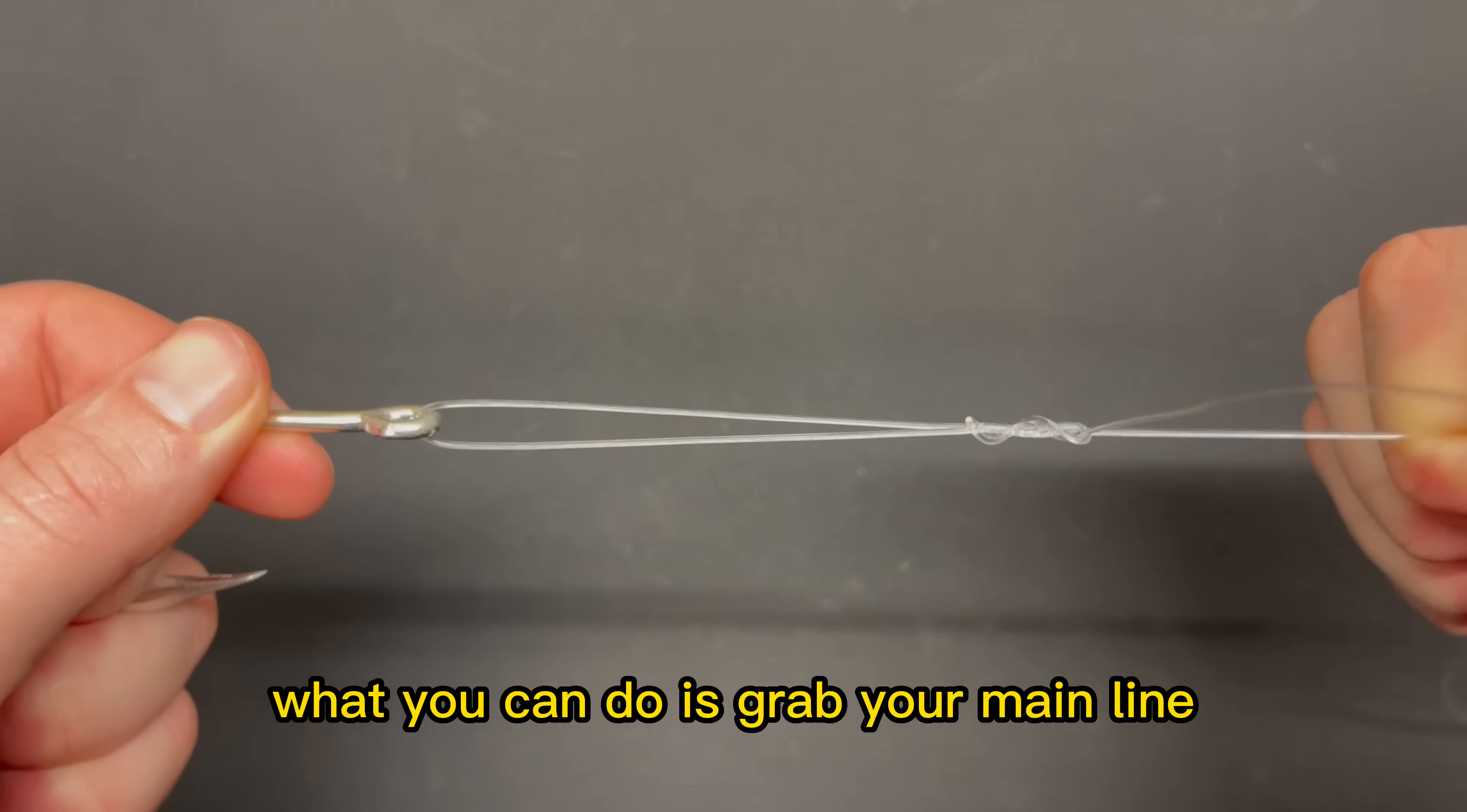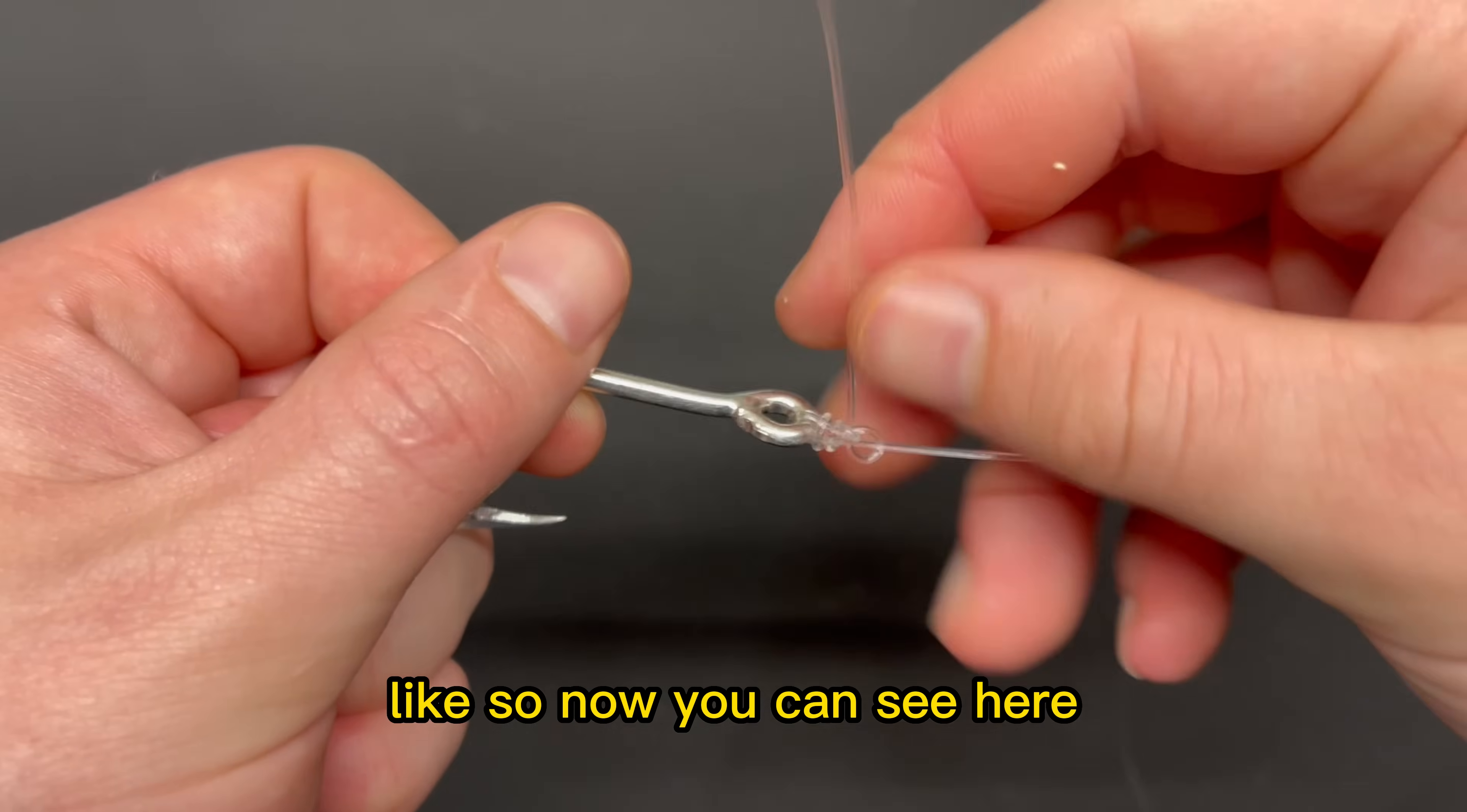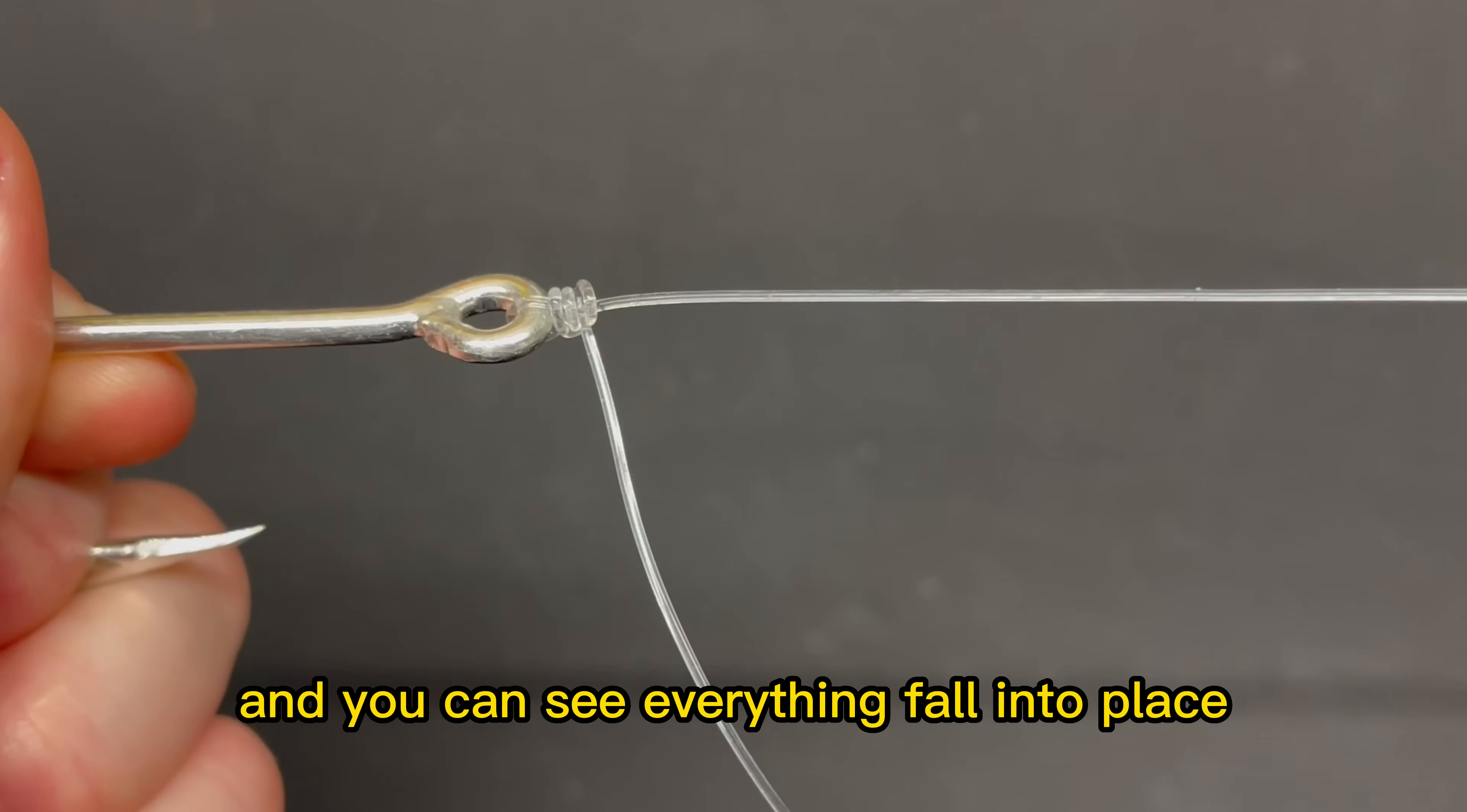Once that's wet, you can grab your main line and begin to cinch it all the way down. Now you can see here, you want to take your tag end and pull that slack out, and then you can grab your main line and pull it tight and you can see everything fall into place.